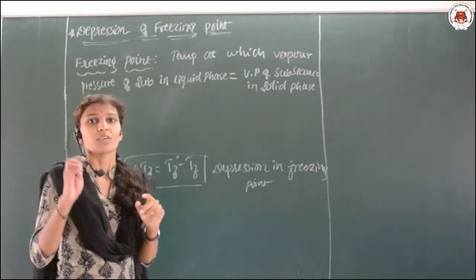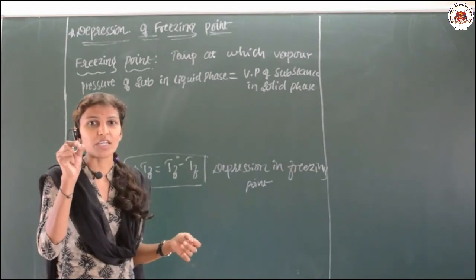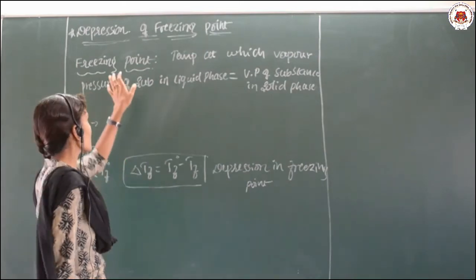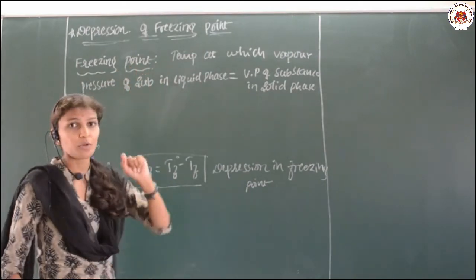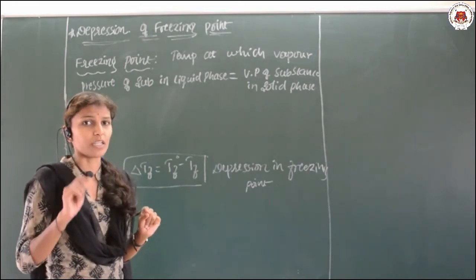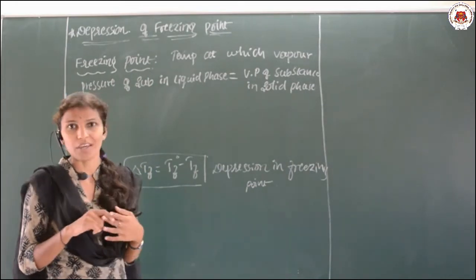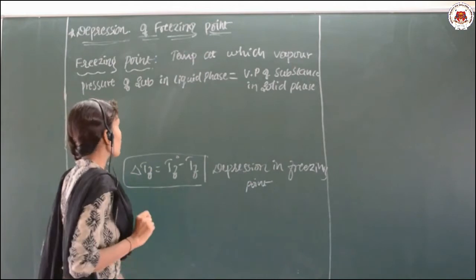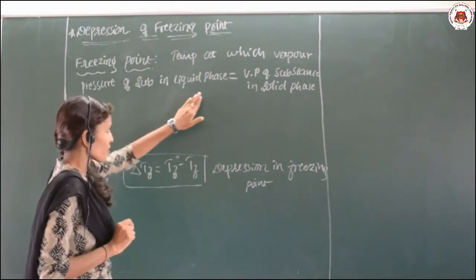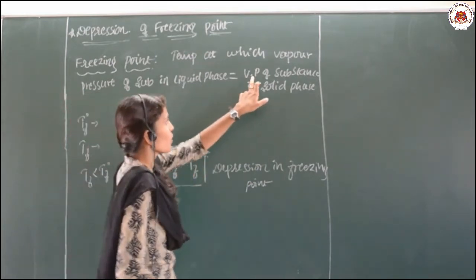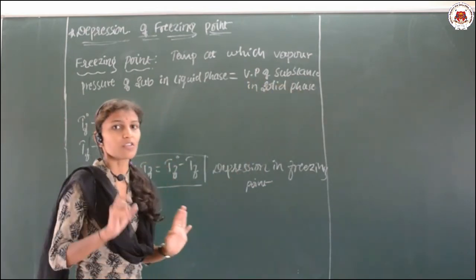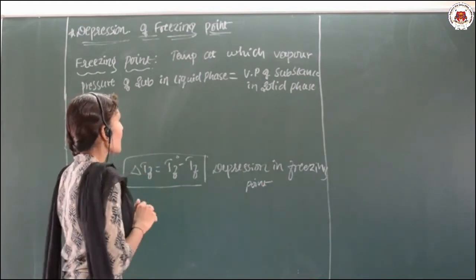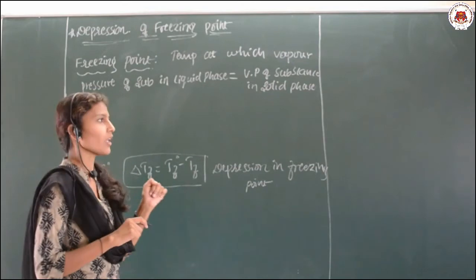Freezing means the liquid state freezes to solid — liquid converts to solid, that is nothing but freezing. The exact definition of freezing point: freezing is the process of converting liquid into solid, like water freezing into ice. The freezing point is the temperature at which the vapour pressure of the substance in the liquid phase becomes equal to the vapour pressure in the solid phase, meaning solid and liquid phases are in dynamic equilibrium.